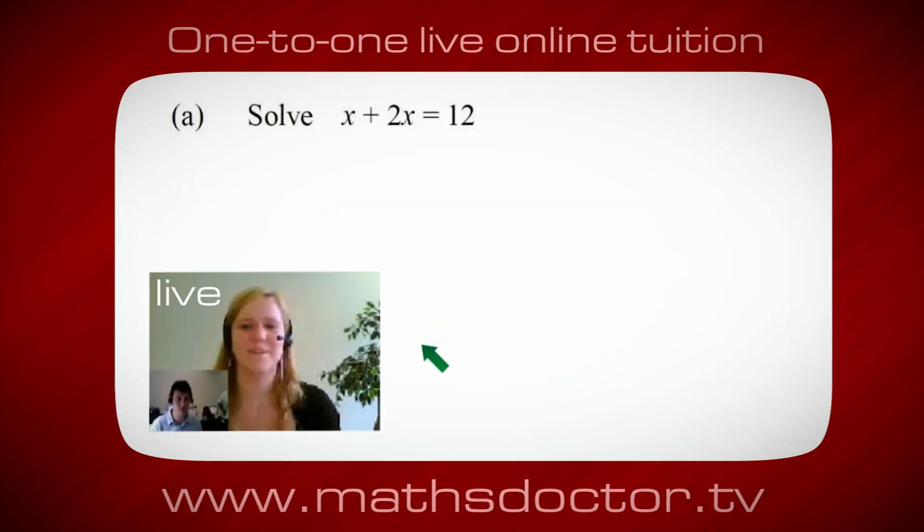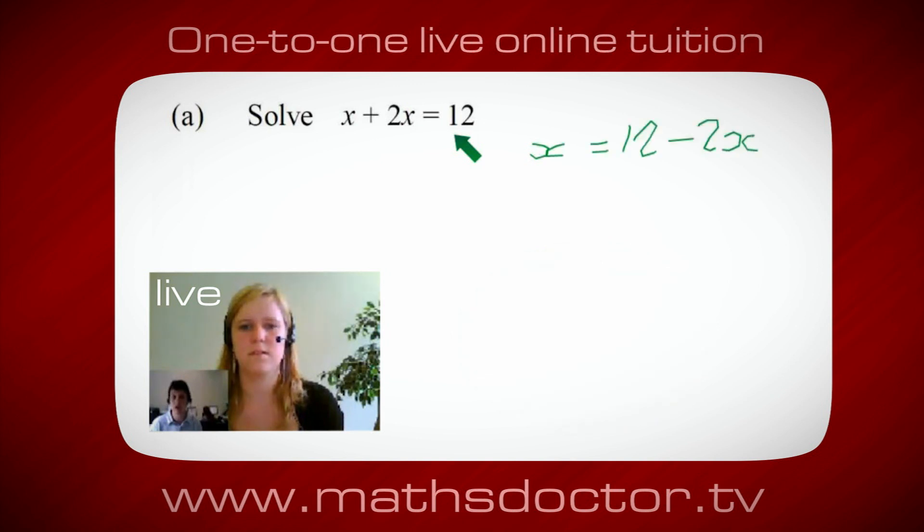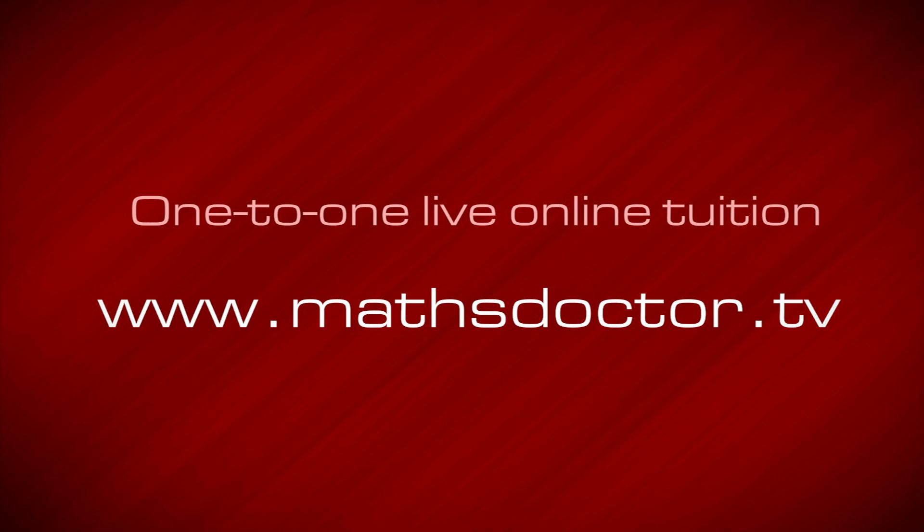Let's have a look at this one. Solve x plus 2x equals 12. So what do you think you do first? I want x on its own, so I would put x equals 12 minus 2x. A lot of the time we want to get x by itself, but what we want to do first is get all of these x's together. Can you see anything we can do with this? Oh, it's 3x, isn't it? Yeah, absolutely. So 3x equals 12. And so x equals 4. Brilliant, spot on, well done.